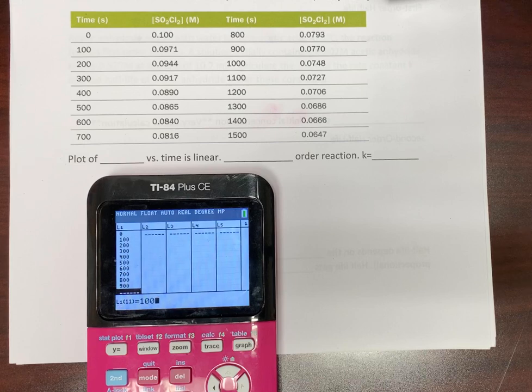900, 1,000, 1,100, 1,200, 1,300, 1,400, 1,500.